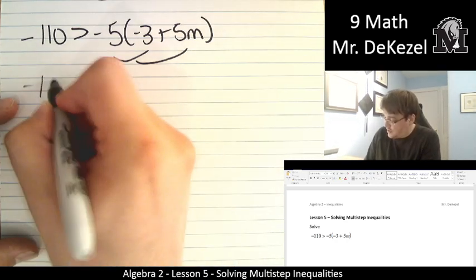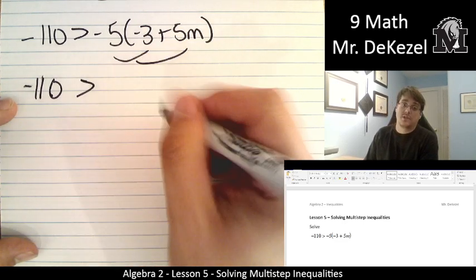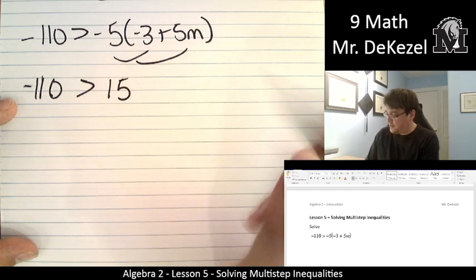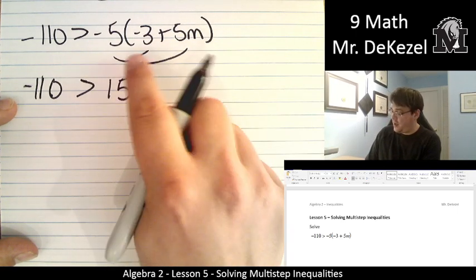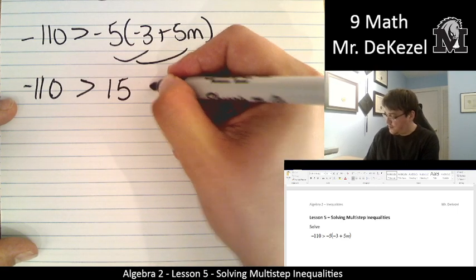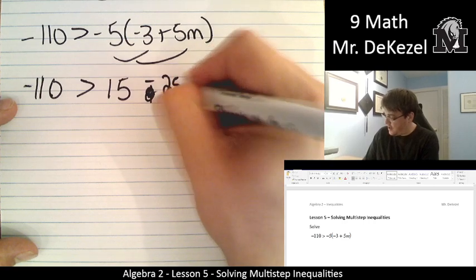So we get minus 110 on this side. That doesn't change. And that's greater than minus 5 times minus 3 is positive 15. And then minus 5 times positive 5 is negative 25m.